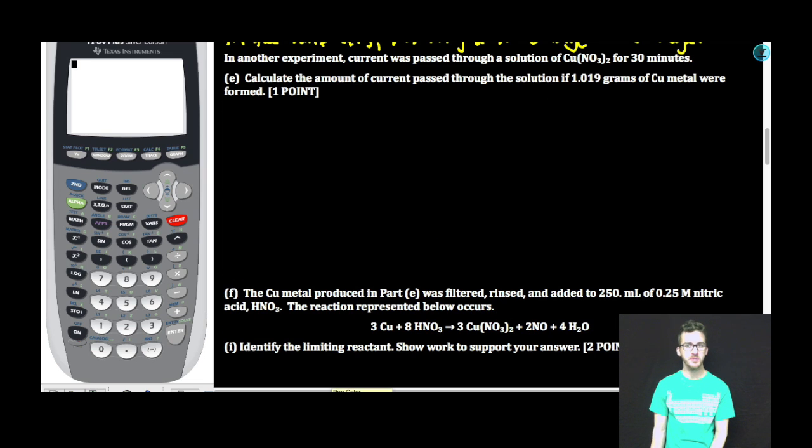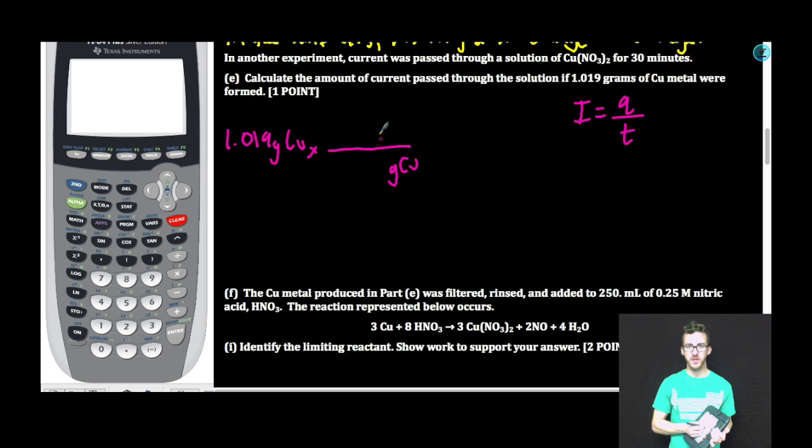In another experiment, current was passed through a solution of copper to nitrate for 30 minutes. Calculate the amount of current passed through the solution if 1.019 grams of copper metal were formed. This question is still asking us to think about the relationship between charge and time. However, in this example, we are already given the mass in grams that have plated out. We have got 1.019 grams of copper. First thing we want to do is convert that to moles of copper. And because we are looking for the amount of current, we need to know what the charge is and for how long in seconds.